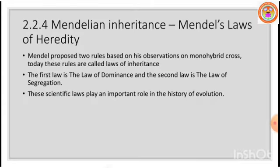Let us continue. Mendel proposed laws of heredity — three laws based on observations of monohybrid as well as dihybrid crosses. You know that a monohybrid cross is one in which only one pair of contrasting traits is crossed. The first law of inheritance is the Law of Segregation. These scientific laws play an important role in the history of evolution.